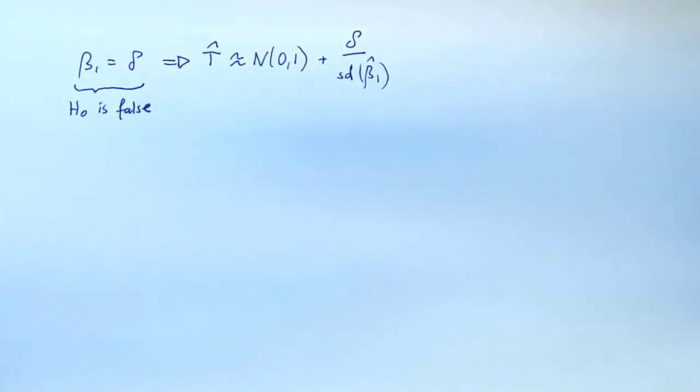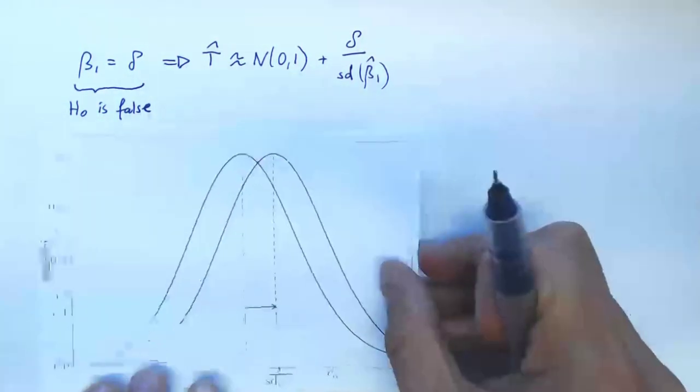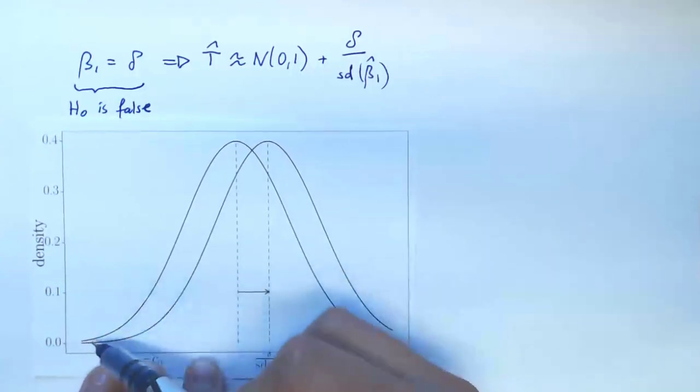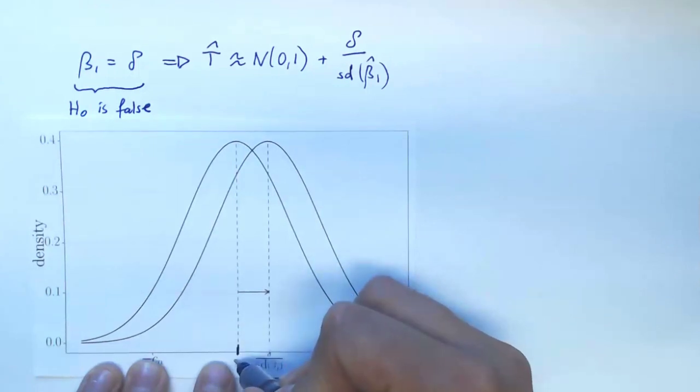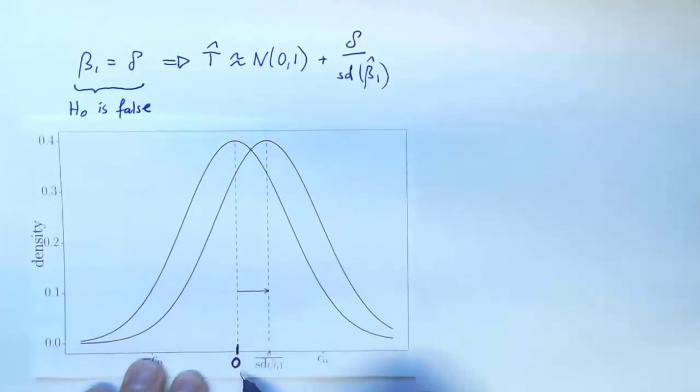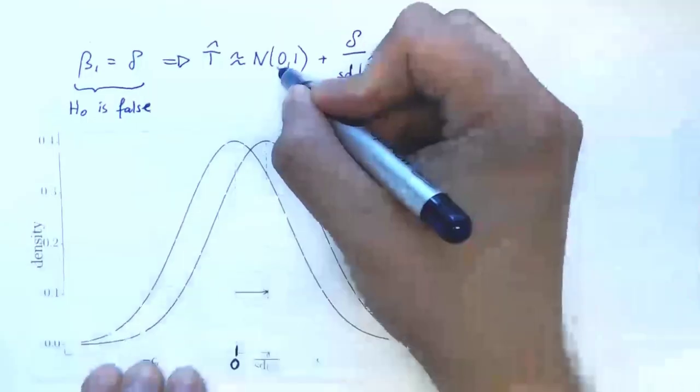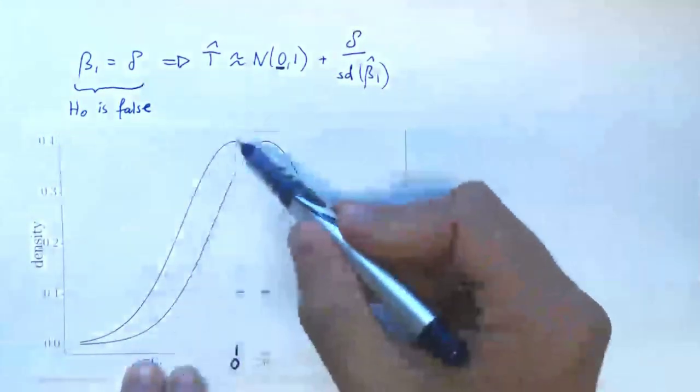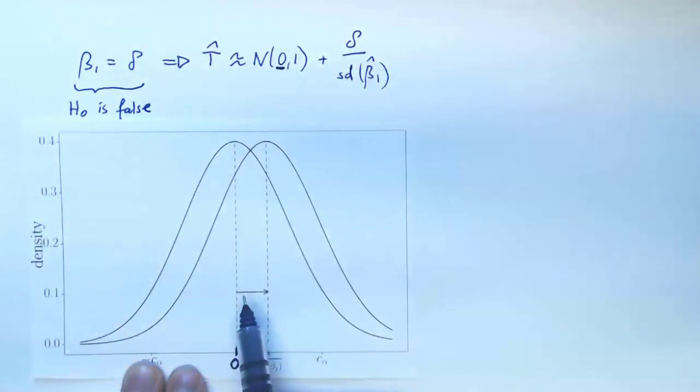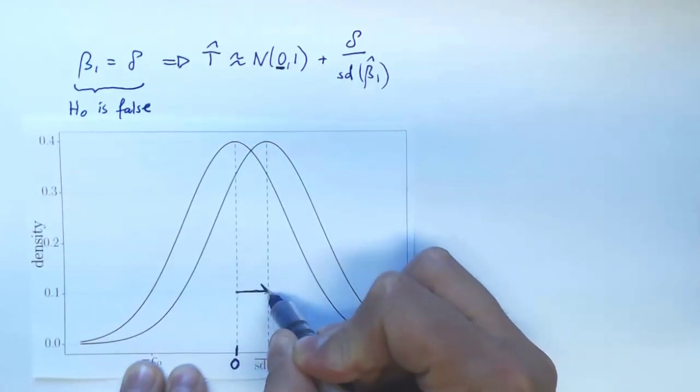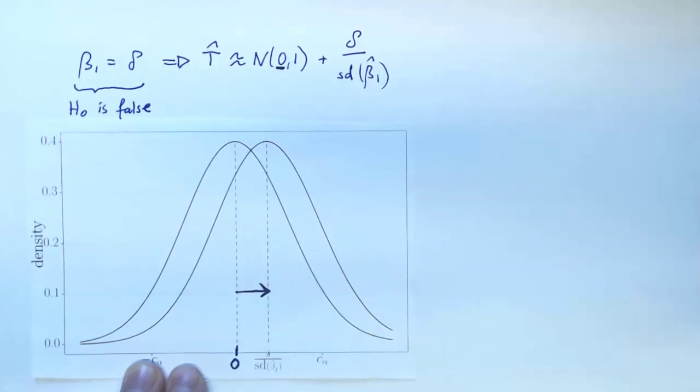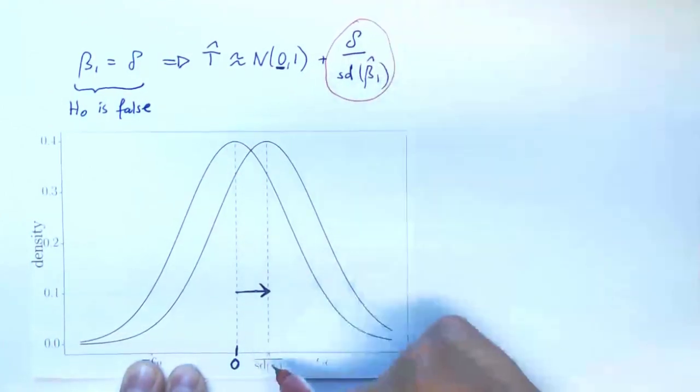Then the distribution of our test statistic is given by a standard normal that is shifted by this number. So what does that look like? Well, we're starting out with a standard normal distribution. So this has variance one and expectation zero. So this is this zero. Now we're shifting it by some number. So let's suppose delta is positive, then we're shifting it to the right. And then it has a positive center as given by this number.